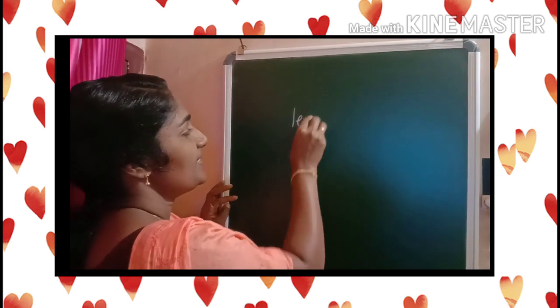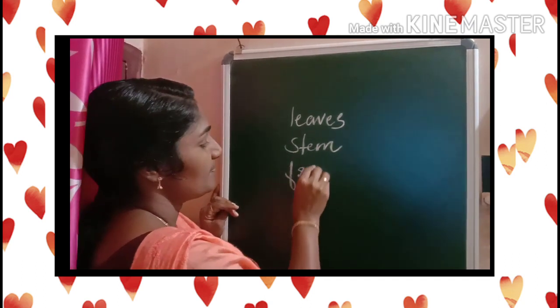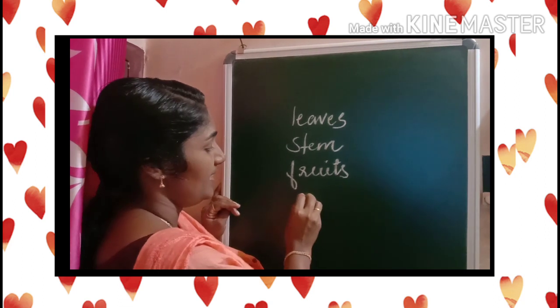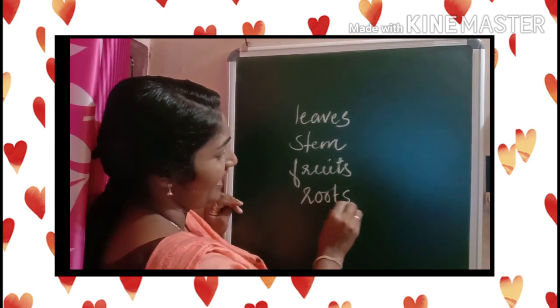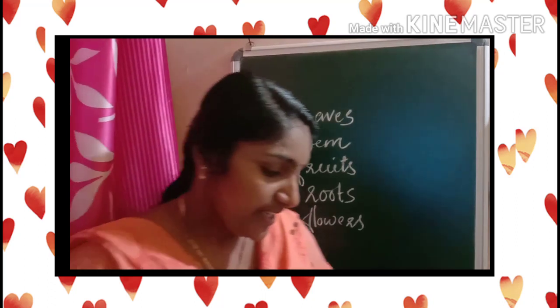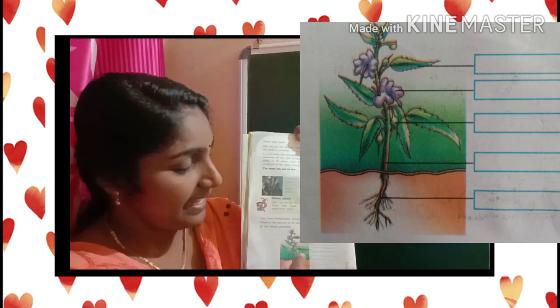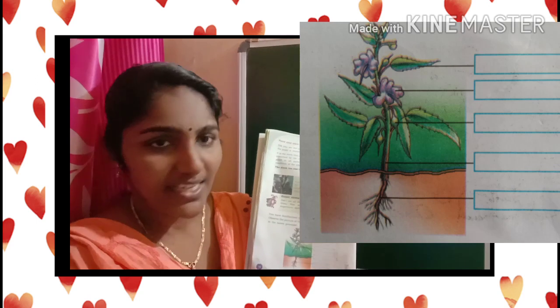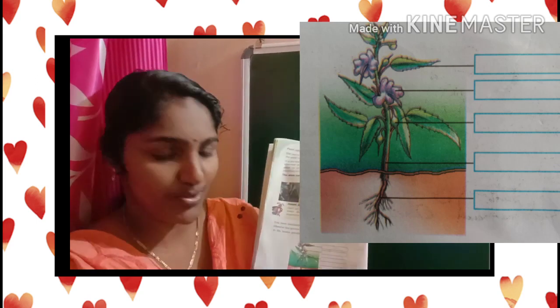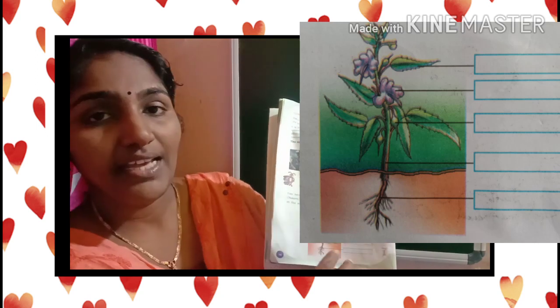Now you have familiarized yourself with the different parts of a plant: leaves, stem, roots, and flowers. In your textbook page number 18, you can see a plant picture and some boxes are provided. Can you complete these boxes? Yes, of course you can. The first one is leaf, next flower, fruit, stem, and root. You must do this in your textbook very well.